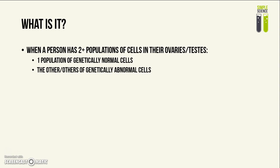So what is germline mosaicism? When a person has two or more populations of cells in their ovaries or testes, and one of the populations is genetically normal, and the other or others are genetically abnormal cells. By genetically abnormal, I mean there may be point mutations in the DNA, or large deletions and insertions, chromosomal breaks, or abnormal number of chromosomes, etc.